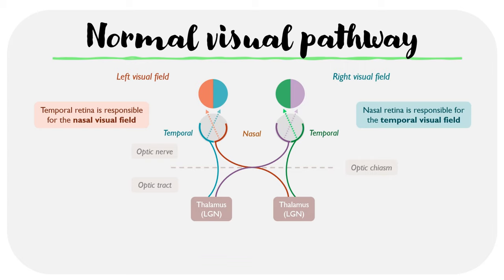Here we have another way of illustrating the visual fields instead of drawing all of the light rays. You can see that we have the inner semicircles which represent the nasal visual field and the outer semicircles which represent the temporal visual field.